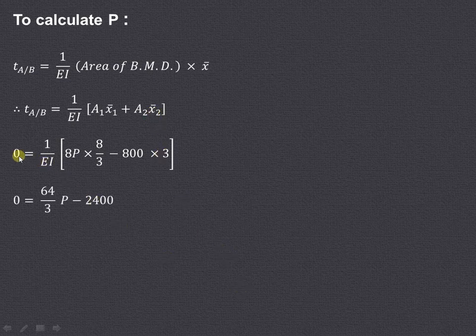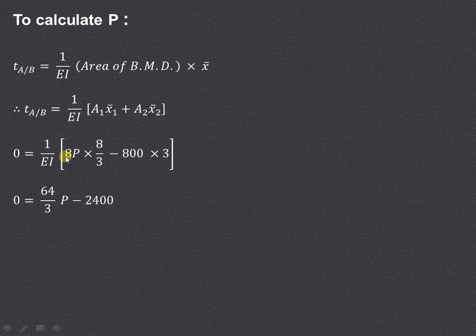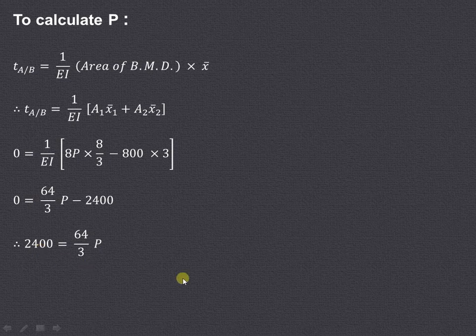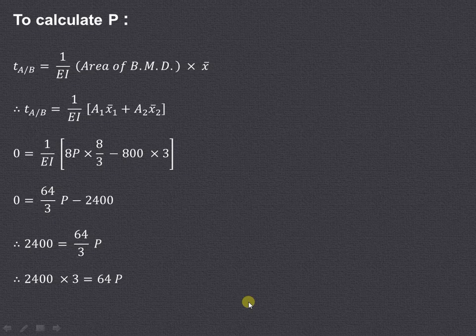This EI will get cross multiplied with 0 and will get cancelled out. 8 into 8 that is 64P upon 3 minus 800 into 3 that is 2400, equals 0. Transfer this negative term on this side so it will become positive. And now you can easily calculate the value of P. So 2400 into 3 divided by 64 will give you the value of P.